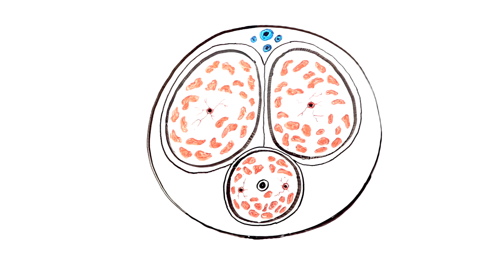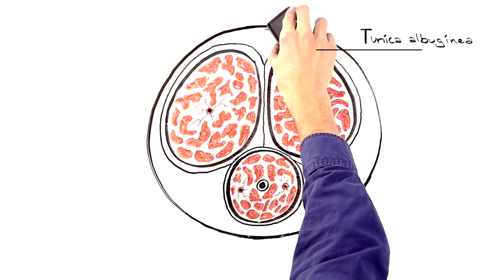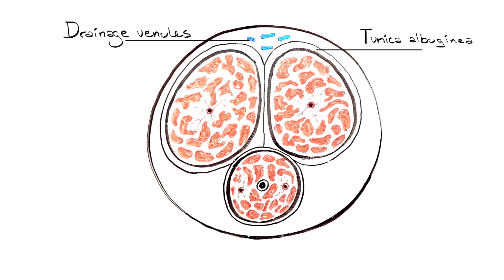As the tissue swells, it expands against the tunica albuginea, which presses against drainage venules, thus limiting blood flow out of the penis.